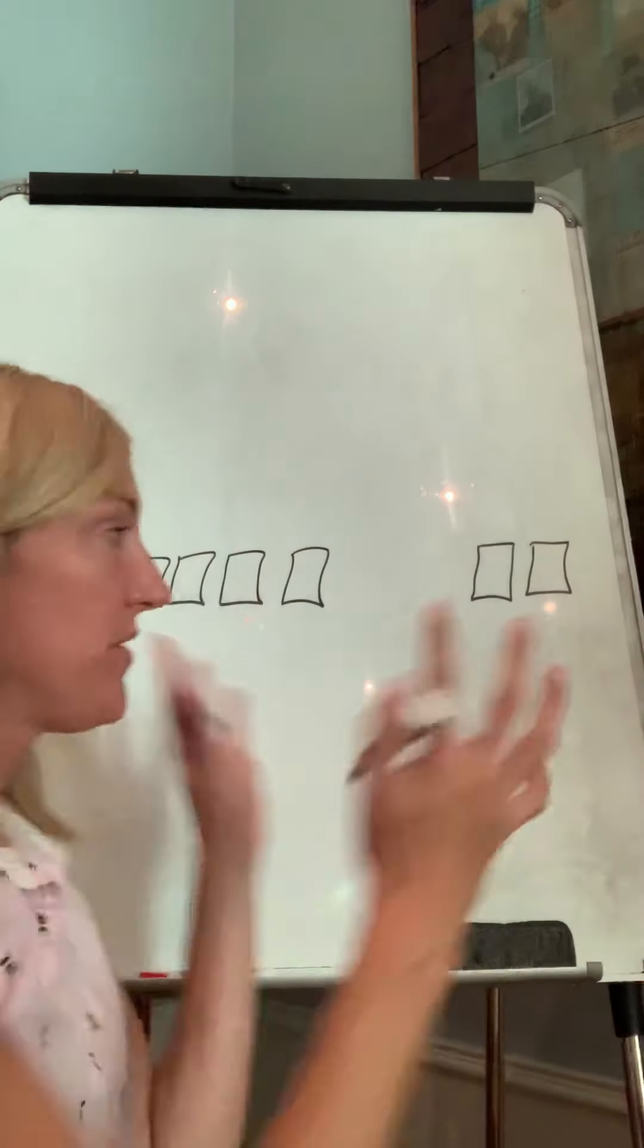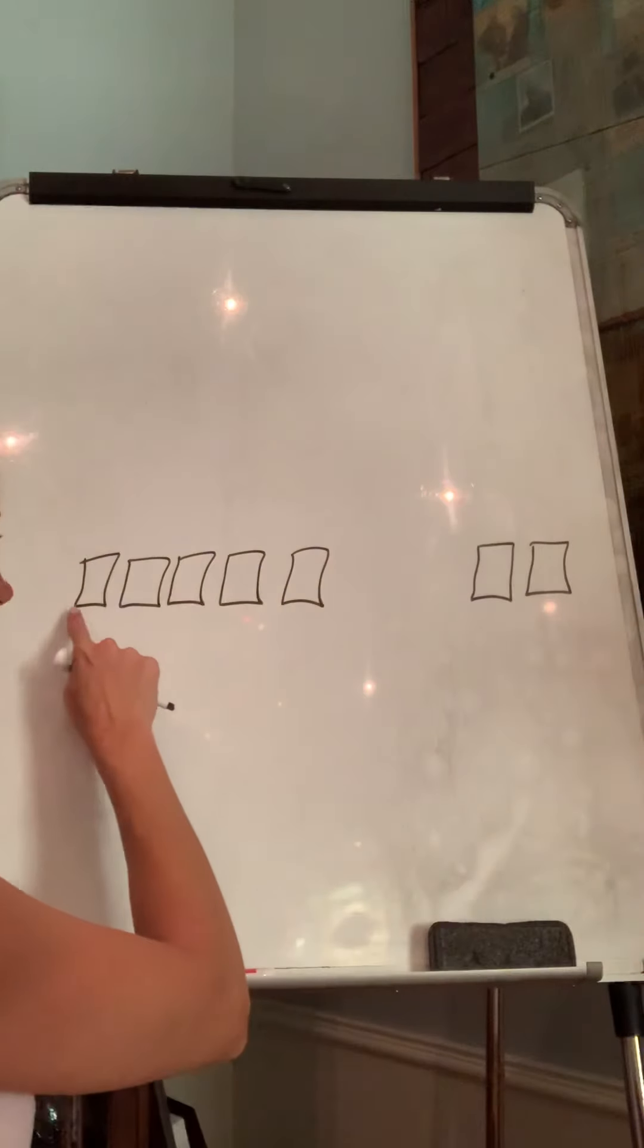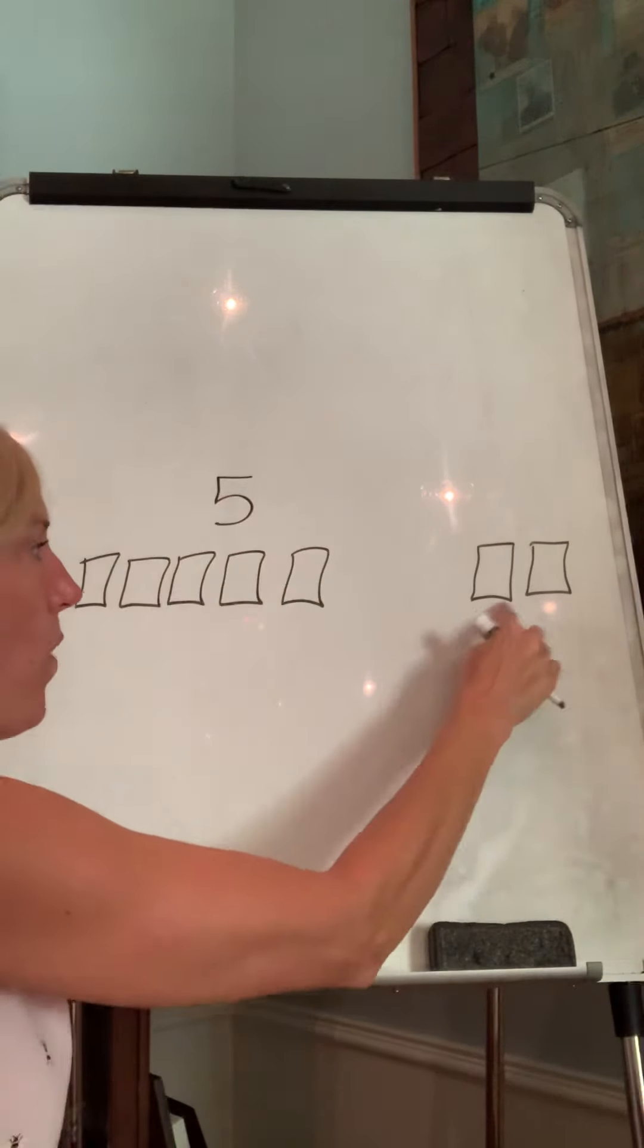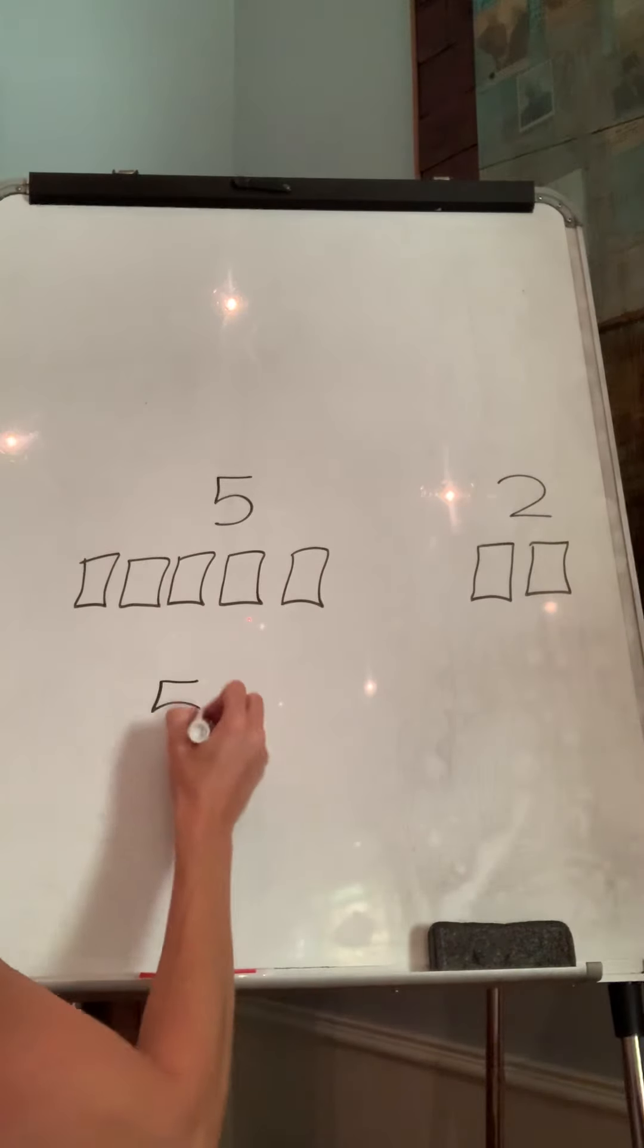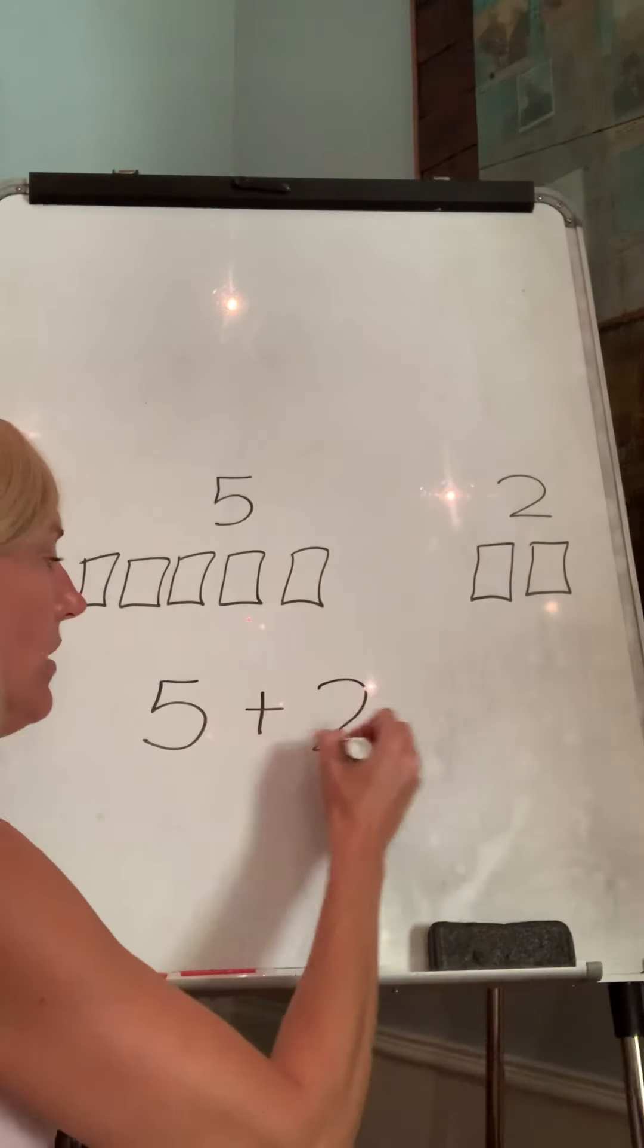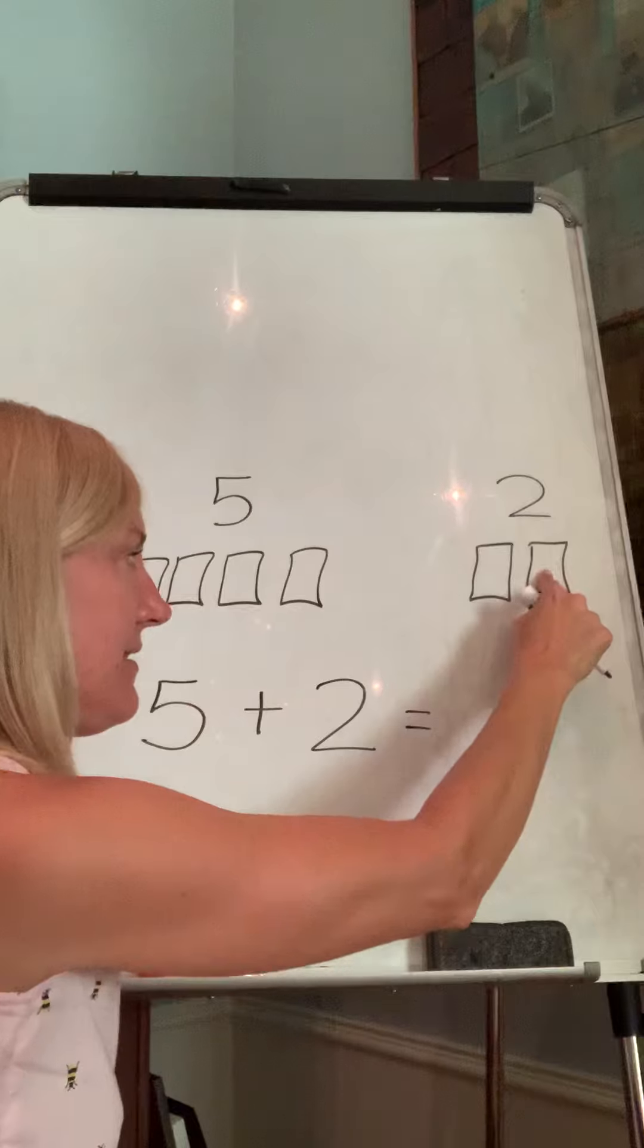Well, again, we're going to put them all together. So we're going to be adding, right? So we have one, two, three, four, five over here, one, two over here. So I'm going to write five plus two equals five, six, seven.